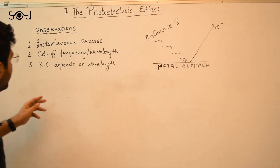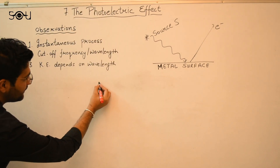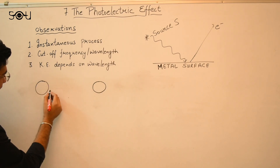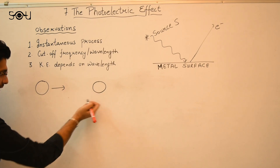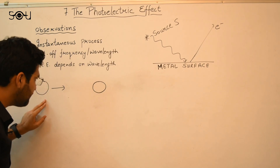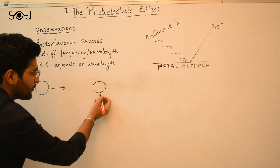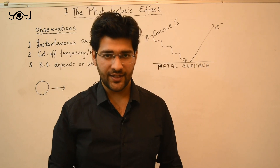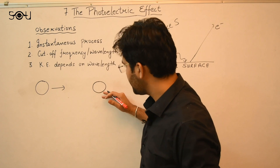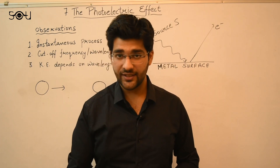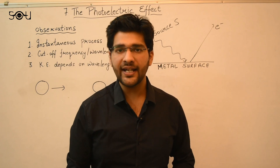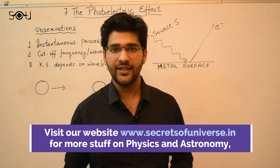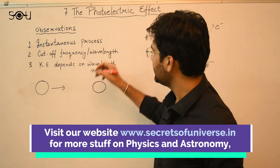Let's see how Einstein explained the results using the particle nature of light. For the instantaneous process: imagine a stationary ball and a moving ball approaching and striking it — as soon as they collide, energy and momentum are immediately transferred. It does not take minutes. Albert Einstein considered the photoelectric effect to be a collision between two particles — photons and electrons — and hence explained how it is an instantaneous process.